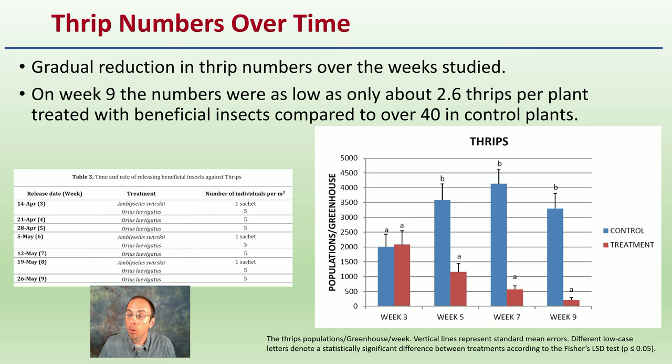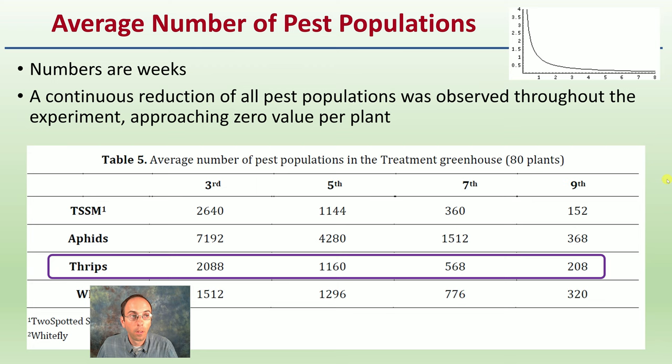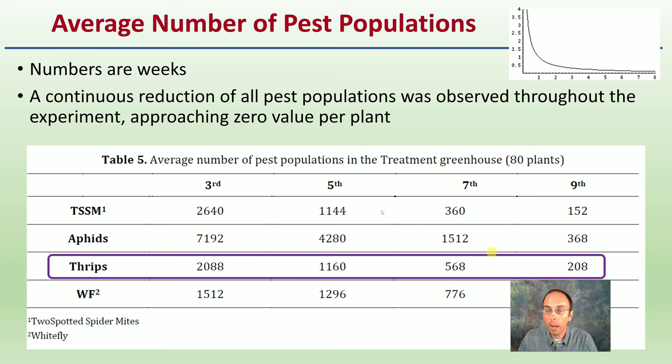Compared to over 40 thrips in the control plants that were not treated — we can see the great contrast here. They both started around the same, but the control was definitively and significantly higher, while the treated group slowly decreased over time. A continuous reduction in all pest populations was observed throughout the experiment, approaching zero plant values. That was a great sign that these beneficial insects could be very effective in your growing operation.